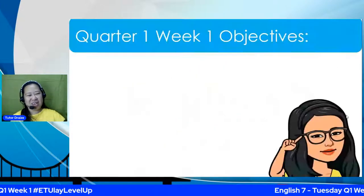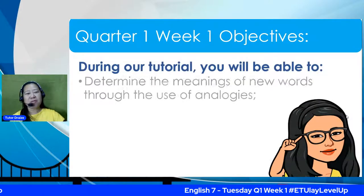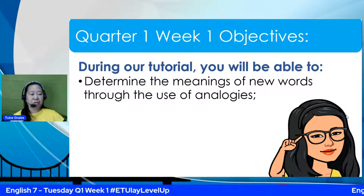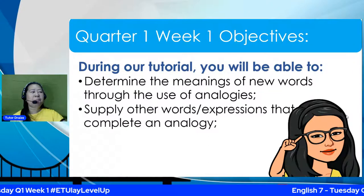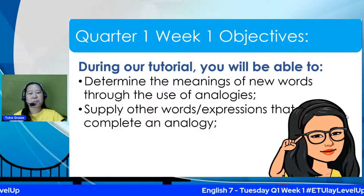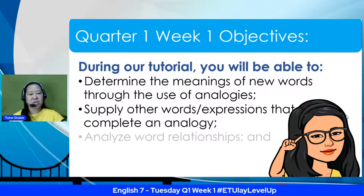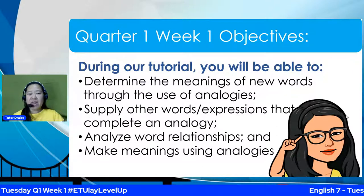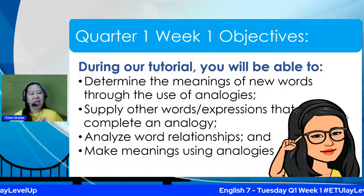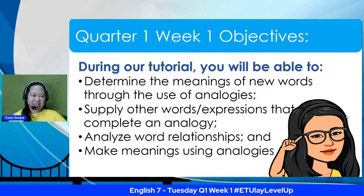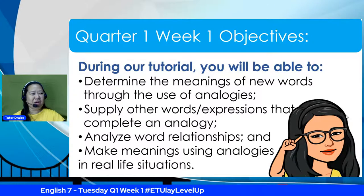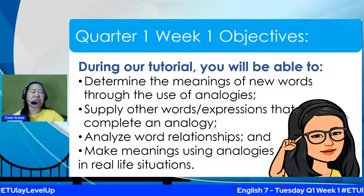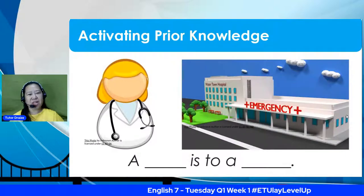For our objectives, these are the things that you will be learning today. First, you are going to determine the meanings of new words through the use of analogies. We are also going to supply other words and expressions that complete an analogy, analyze word relationships, and make meanings using analogies. Everything about analogies, we will be learning them today. You will also be using these analogies in real-life situations. So, that is really important.